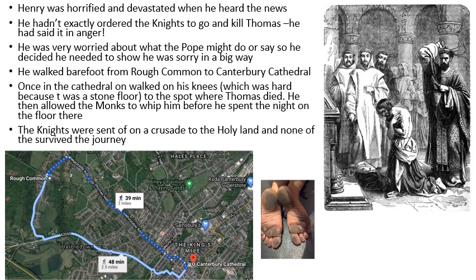Hopefully some of you guessed that Henry didn't take this news very well. He was actually horrified and absolutely devastated, and he burst into tears when he heard that Thomas had been killed. Although they'd fallen out, they had been really good friends — he'd trusted him enough to make him Archbishop of Canterbury. And he hadn't exactly ordered the knights to kill Thomas; he'd said it in anger. We've all said something we absolutely don't mean, but once you say it you cannot take it back. The four knights took it as an order, but that wasn't what it was.